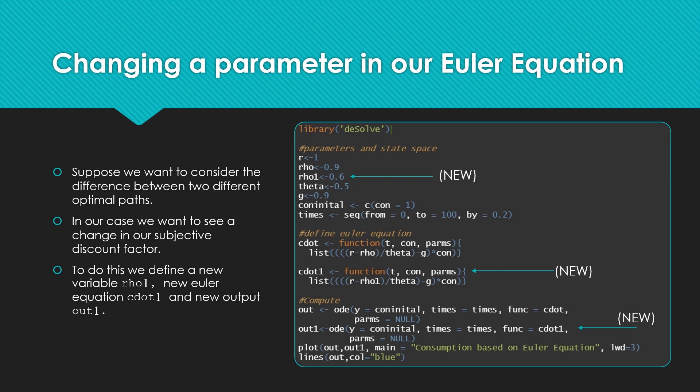Now, let's talk about what if we want to change a parameter in our model and see the difference in terms of optimal paths. To do this, we want to see our change in our subjective discount factor, that being rho. To do this, we define a new variable, that being rho1, a new Euler equation, c.1, and a new output equation, out1.